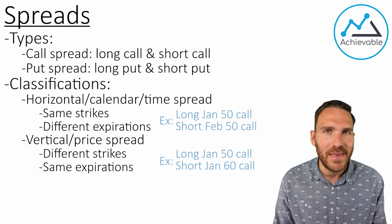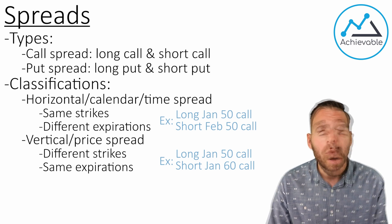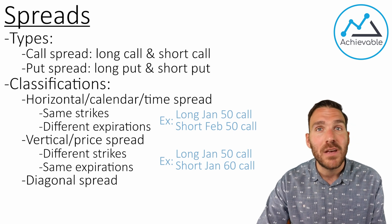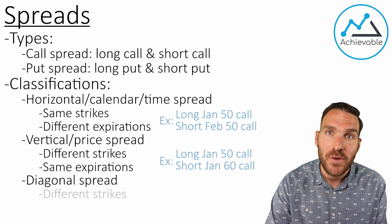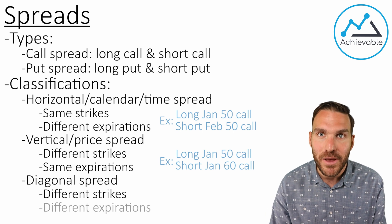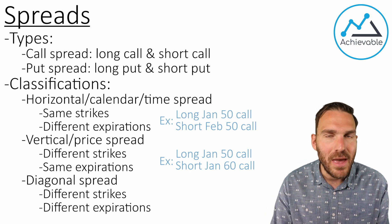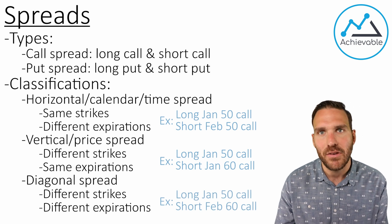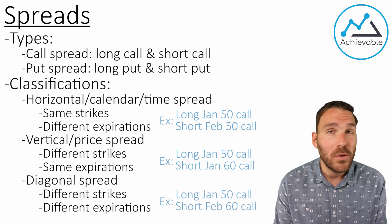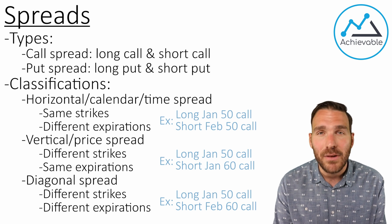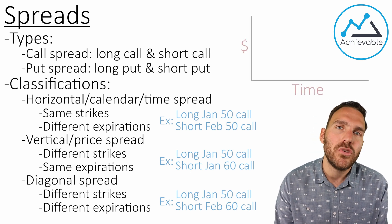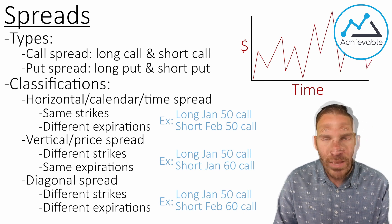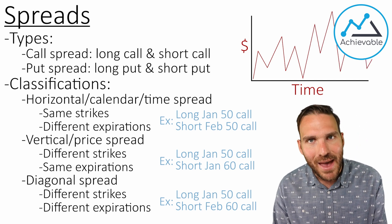The last spread classification is a combination of the two. We simply call this a diagonal spread. This involves a spread where we have a difference on both sides — different strike prices and different expirations. An example would be a long Jan 50 call and a short February 60 call. The terms horizontal, vertical, and diagonal come from a chart — prices appear on the vertical axis and time on the horizontal axis.